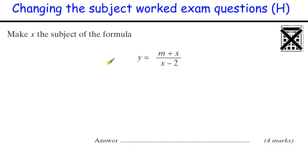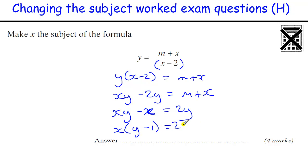And another one, times by the X minus 2, so I've got Y lots of X minus 2 equals M plus X. I want to get the X's together, so I need to multiply out Y times X. Usually you should write these in alphabetical order, always put the number in front of the letter when you're multiplying it out. I'll bring the X over to this side, factorize out the X, and divide by the Y minus 1.